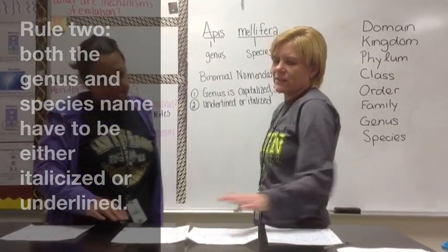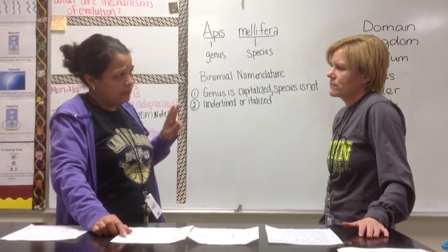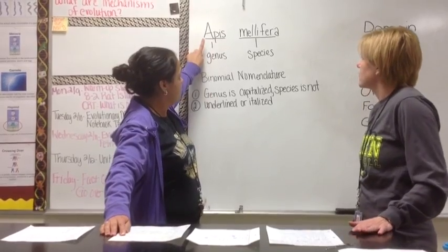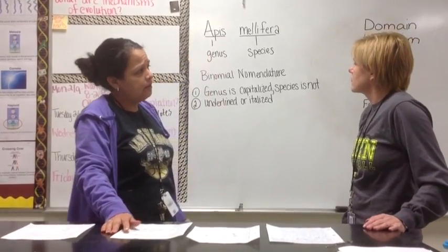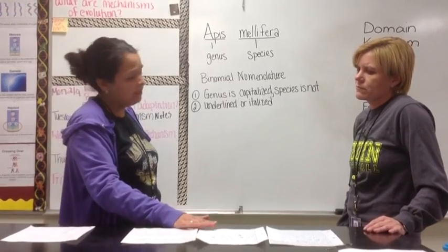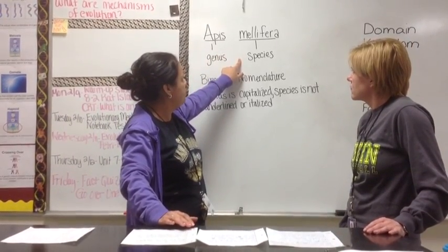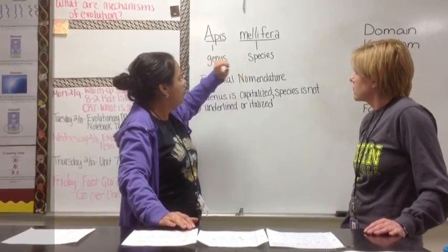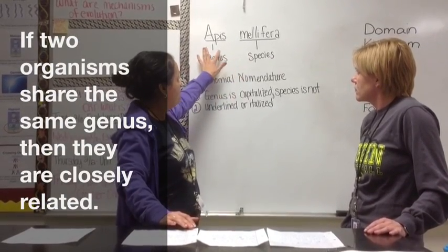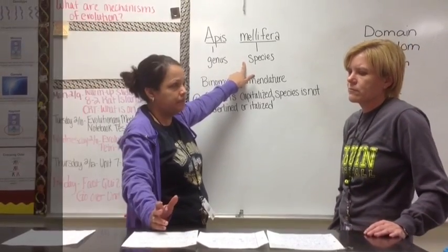What else can the scientific name tell us? Well, if two organisms share the same genus, then they are going to be related. For example, Apis mellifera is the honeybee. Other varieties of bees will also share the same genus, but will differ in species depending on the type of bee.